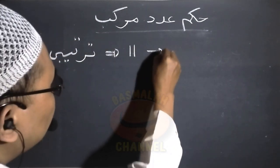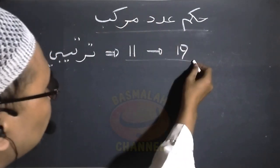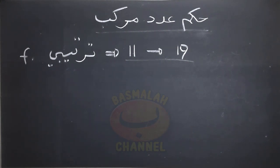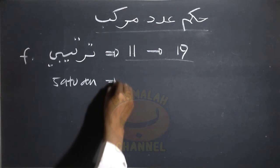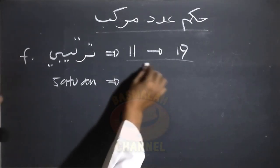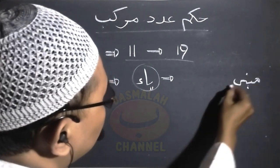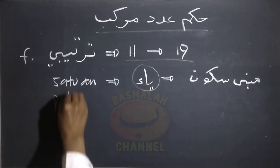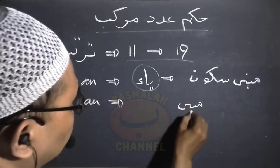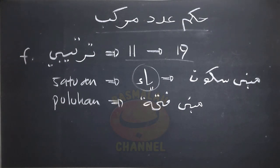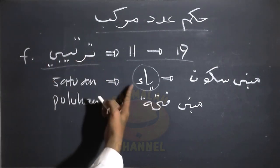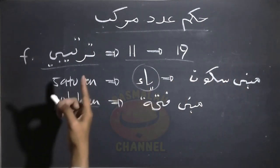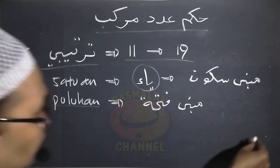Ini adalah merupakan ketentuan dari hukum adat tartibi untuk bilangan sebelas hingga bilangan sembilan belas, yaitu yang kesebelas hingga yang kesembilan belas. Manakala hukum sebelumnya menyatakan semua satuan dan puluhannya itu dimabnikan fathah, namun untuk ketentuan yang ini adalah dikecualikan bagi satuan yang diakhiri dengan ya. Maka dalam hal ini satuannya dihukumi mabni sukun, sedangkan untuk puluhannya tetaplah dimabnikan fathah.